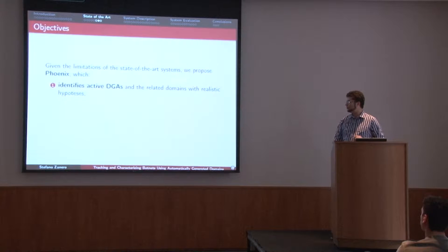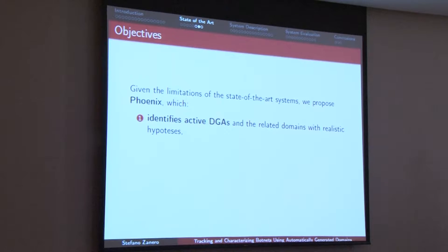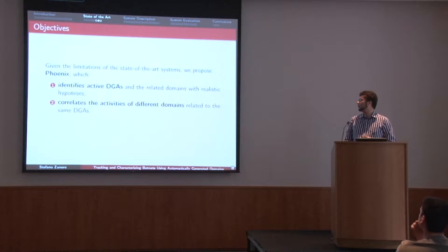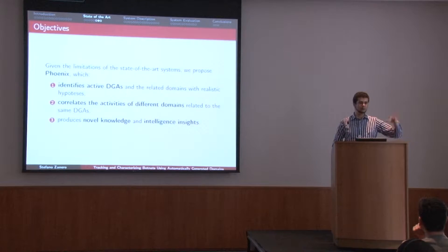Our objective was to build a system — we codenamed it Phoenix, though we found out it was a very bad codename because there's a gazillion things even related to DNS already called Phoenix. This system identifies active domain generation algorithms, correlates the activities of these algorithms by telling us which botnet is generating what, and can tell us about new botnets that we did not know about. All of this by using only passive DNS data, not requiring privacy-sensitive access to data. This means it can be deployed easily for global tracking using just two or three different passive DNS sensors.